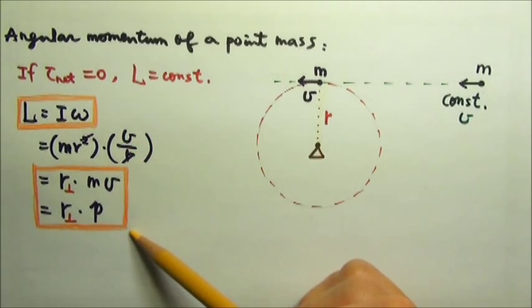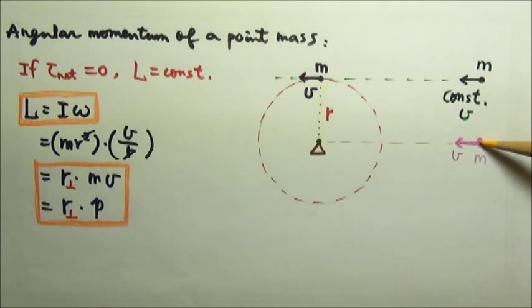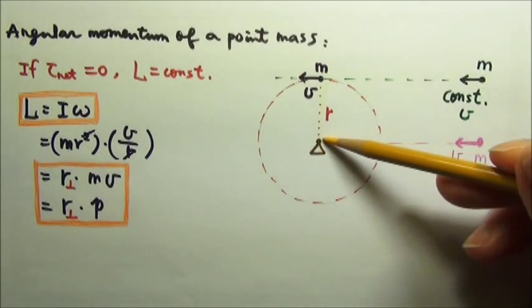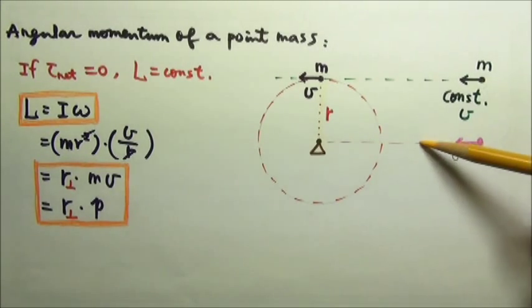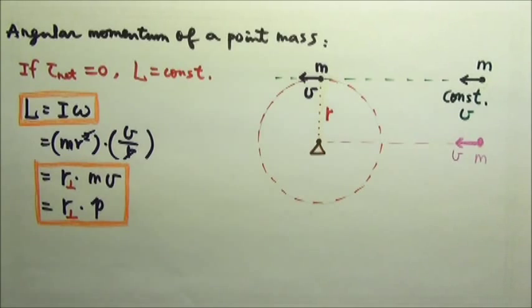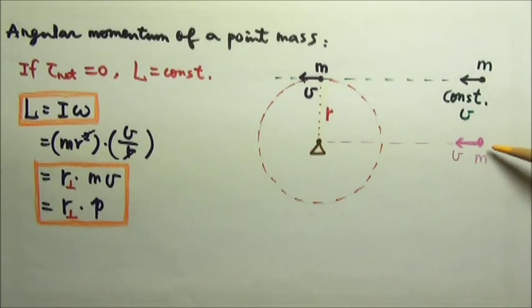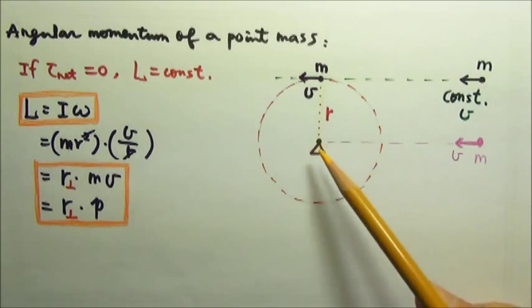Depending on what's given in a problem, sometimes one is more convenient to use than others. By the way, if the point mass moves straight toward the axis or straight away from the axis, the perpendicular R, the distance between the line of motion and the axis would be zero, which means this point mass has no angular momentum relative to the axis.